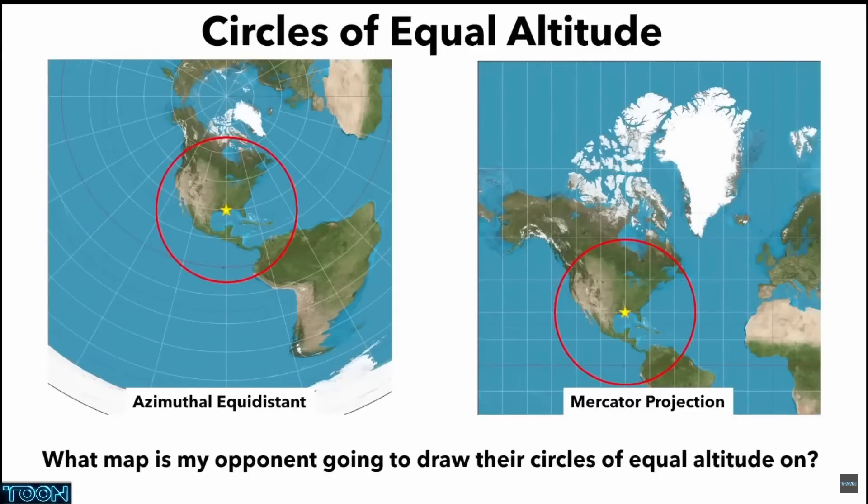All right, final step, and this part really is the nail in the coffin for Flat Earth. The final step is drawing circles of equal altitude. And a circle of equal altitude is simply the set of all points on the surface where the observer would measure that elevation angle to that particular star.